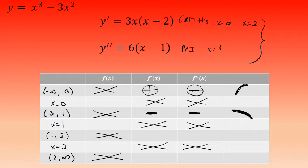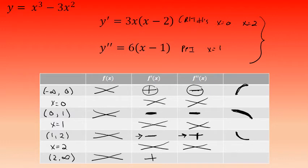Between 1 and 2, choosing a test value of 1.5, the first derivative is negative and the second derivative is positive — the graph is decreasing and concave up. Between 2 and infinity, choosing a test value of 3, the first derivative is positive and the second derivative is positive, so the curve is increasing and concave up.